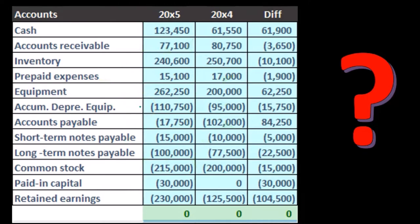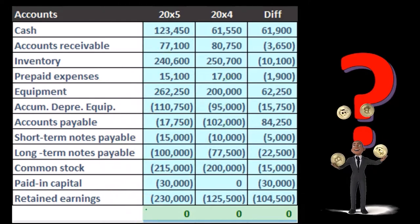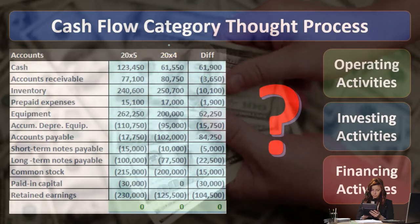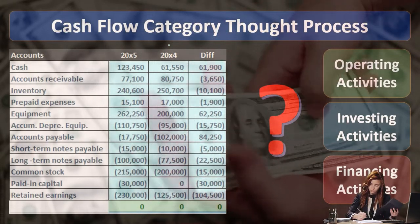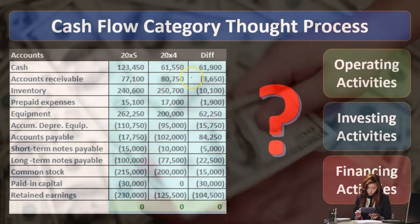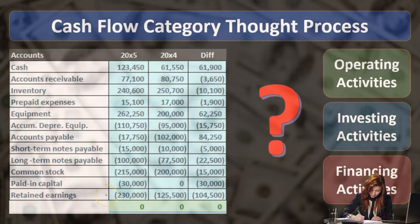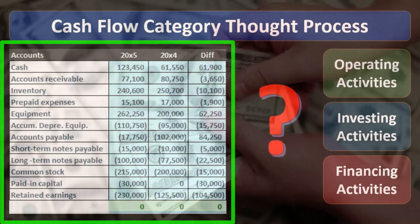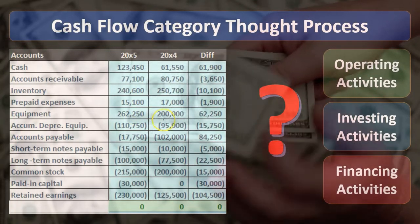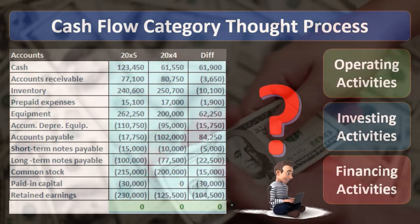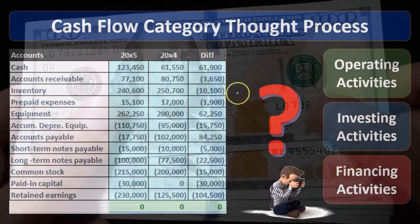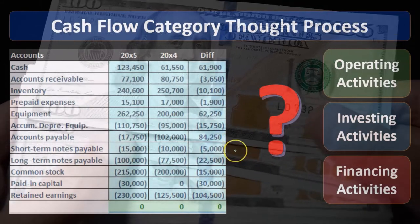We have our balance sheet accounts, and we are in balance by having the debits be positive and the credits be negative — debits minus credits equaling zero — indicating that the current period is in balance. We have two points in time: the prior year and the current year. We took the difference between these two columns, and since both periods are in balance, the sum of those differences must also add up to zero.